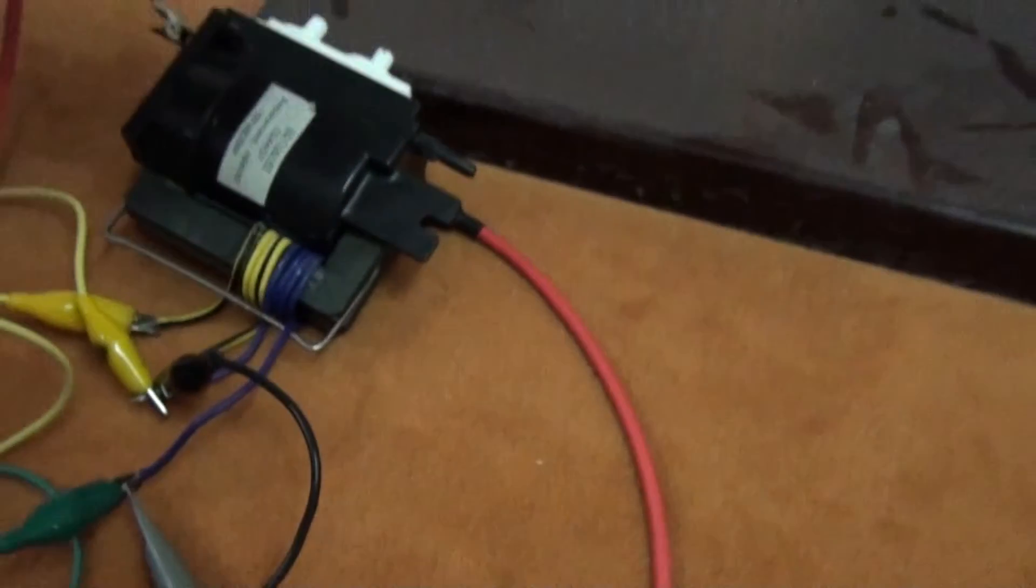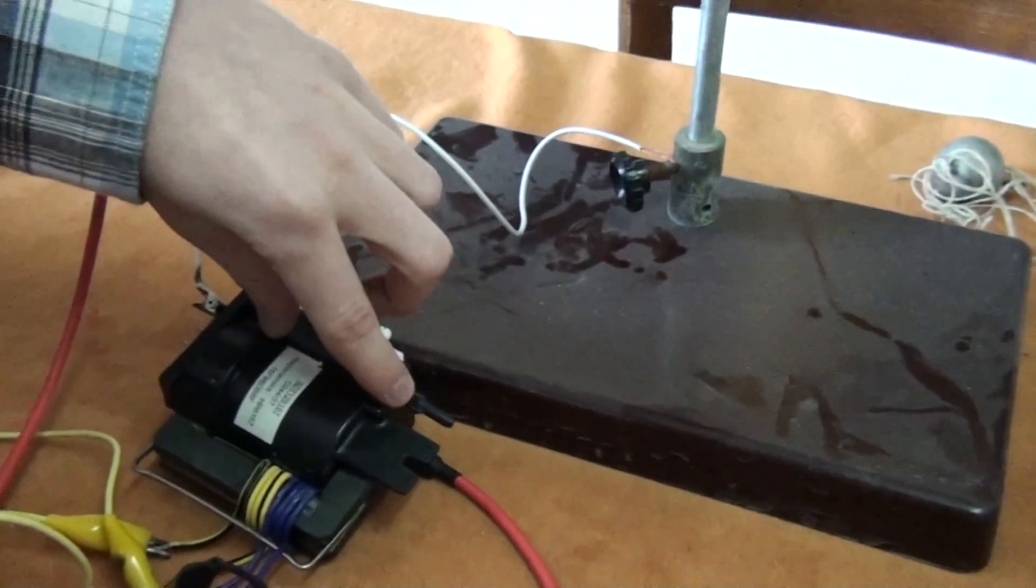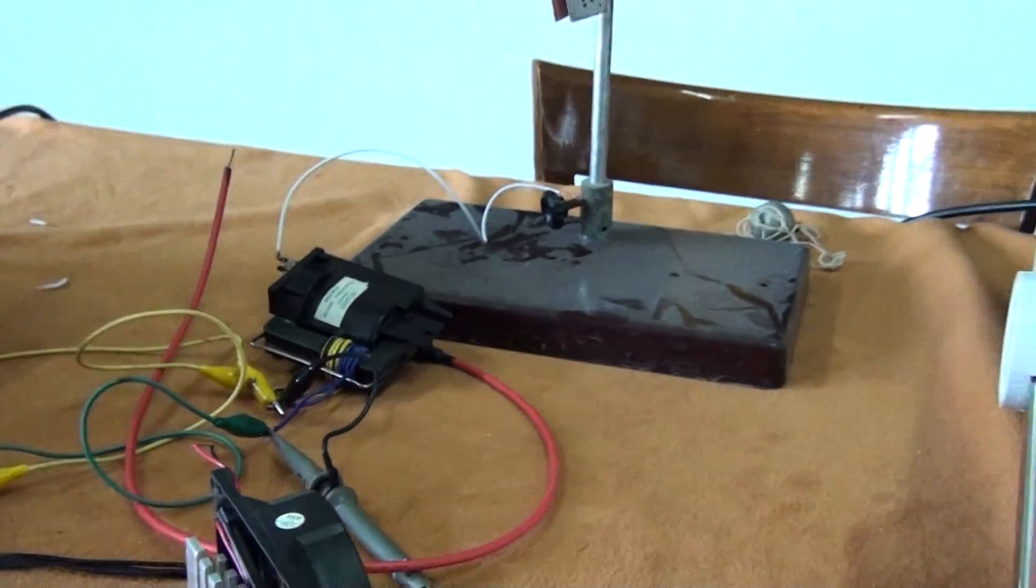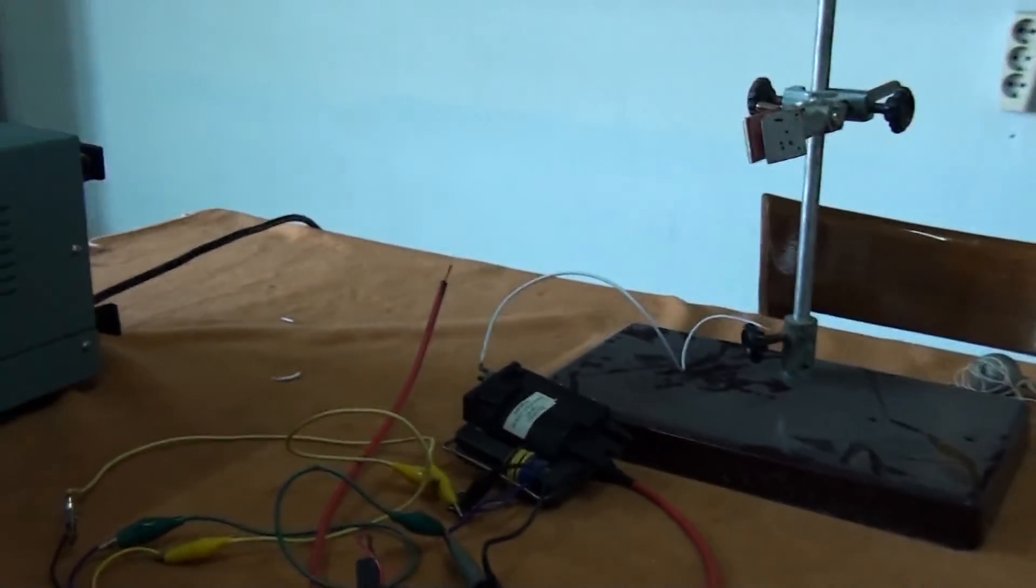And this is the ferrite core. Here is the second winding. Now I'm going to turn all these things up.